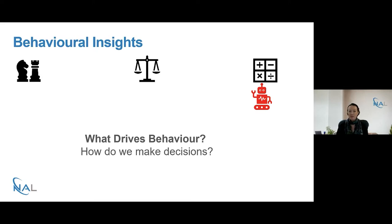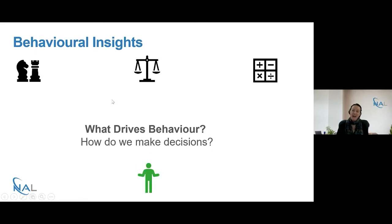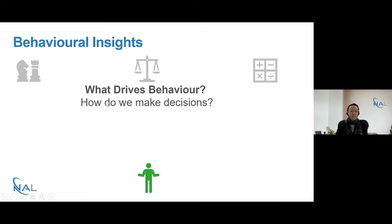But as we know, humans aren't actually robots. While we like to think of ourselves as rational, often we make decisions — and we see others making decisions — that perhaps could be considered irrational. But often, while they look irrational, they're resulting from ways of thinking that are actually very predictable, and behavioural insights seeks to understand how those different factors influence our thinking.